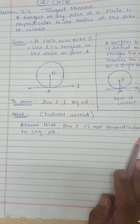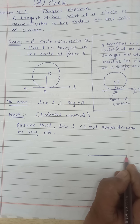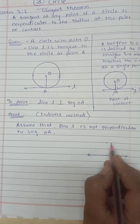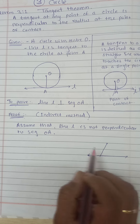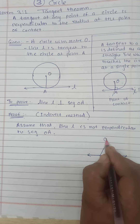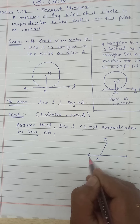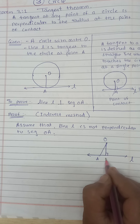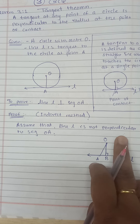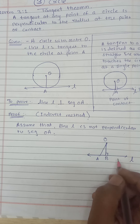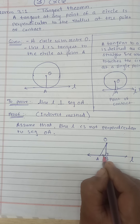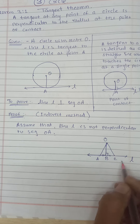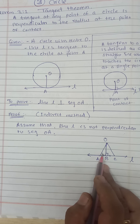Assume that line L is not perpendicular to seg OA, and we'll draw a diagram showing OA and line L. Since OA is not perpendicular to L, we take another segment OB which is perpendicular to line L, and we consider this point B. So OB is perpendicular to line L. Now for the construction, whatever is the distance AB, we take the same distance on the other side and mark another point C, then join OC. So we have got two triangles.